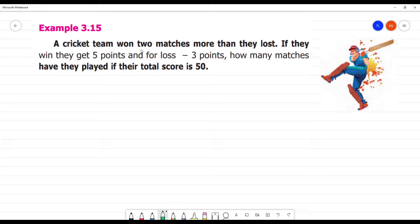A cricket team won two matches more than they lost. If they win, five points. For loss, minus three points. How many matches have they played if their total score is 50?